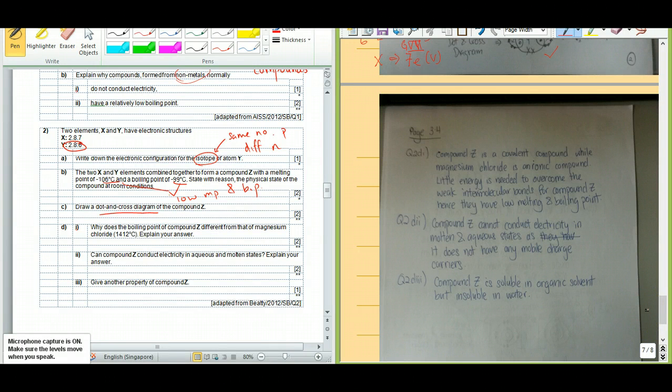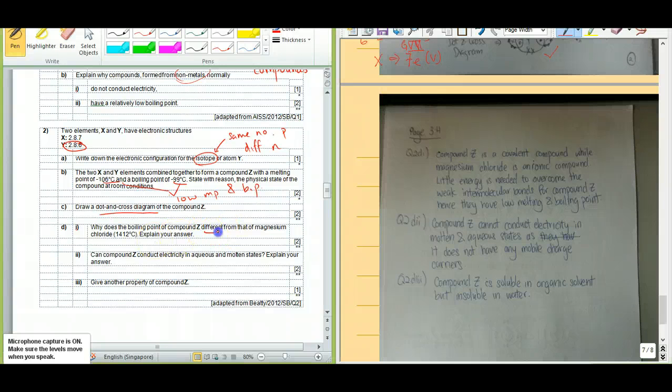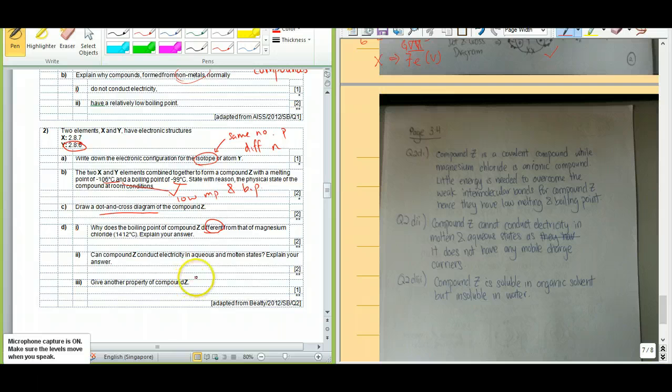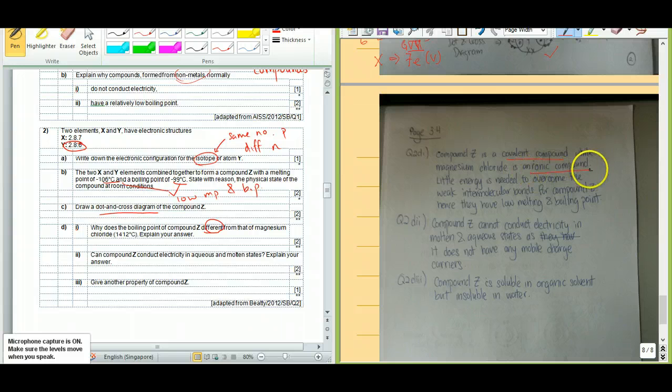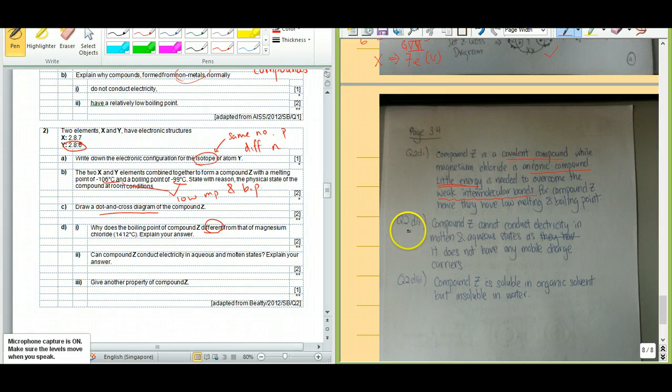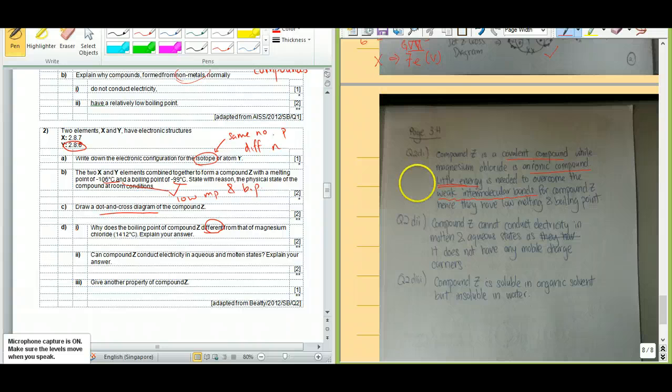For question 2D part 1, we talk about the boiling point. They ask you, why does the boiling point differ from magnesium chloride? First up, you want to say, the difference is actually because Z is a covalent compound, whereas magnesium chloride is an ionic compound. Why Z is so special is because little energy is needed to overcome the weak intermolecular bonds for compound Z. What's so special about covalent? How come it has low melting point? It's because we talk about little energy needed to overcome the force of attraction. In this case, for Z, it will be a weak intermolecular bond.